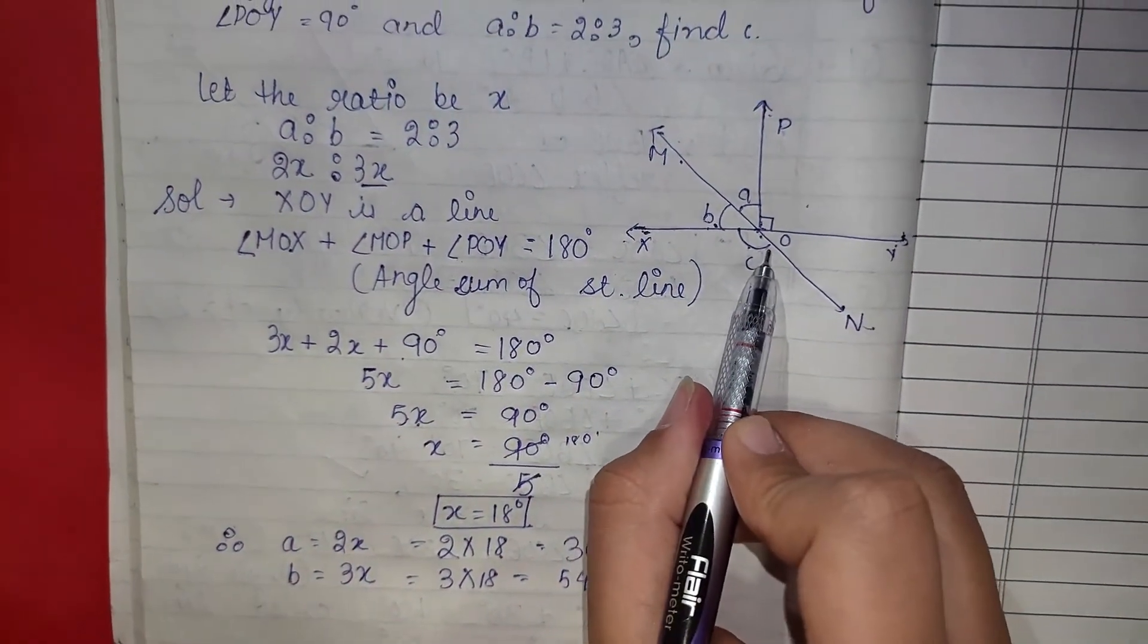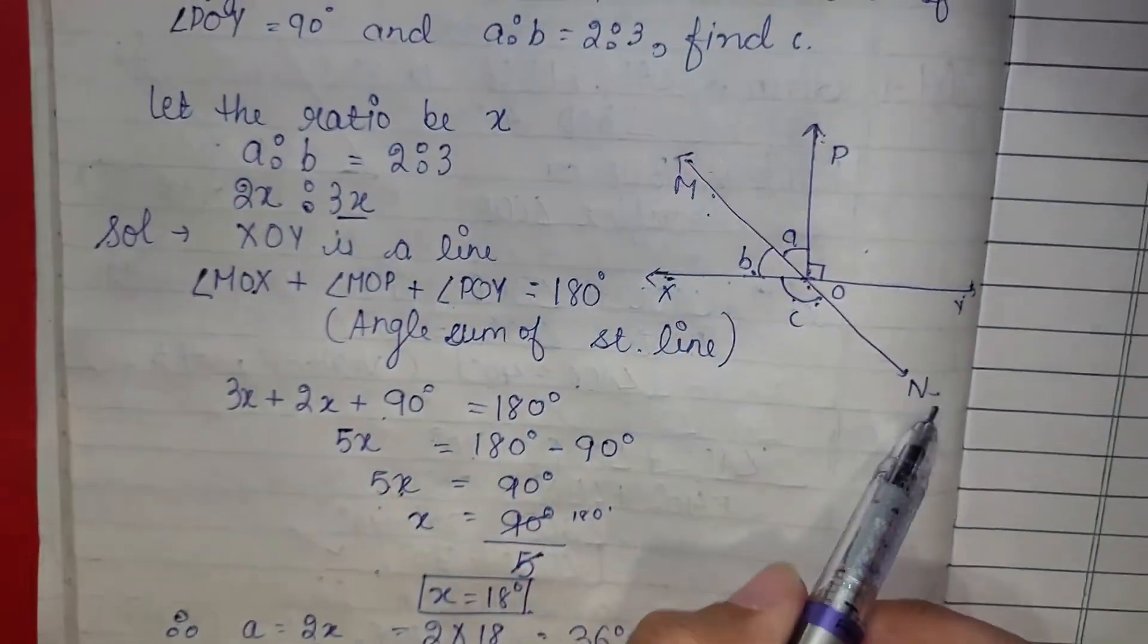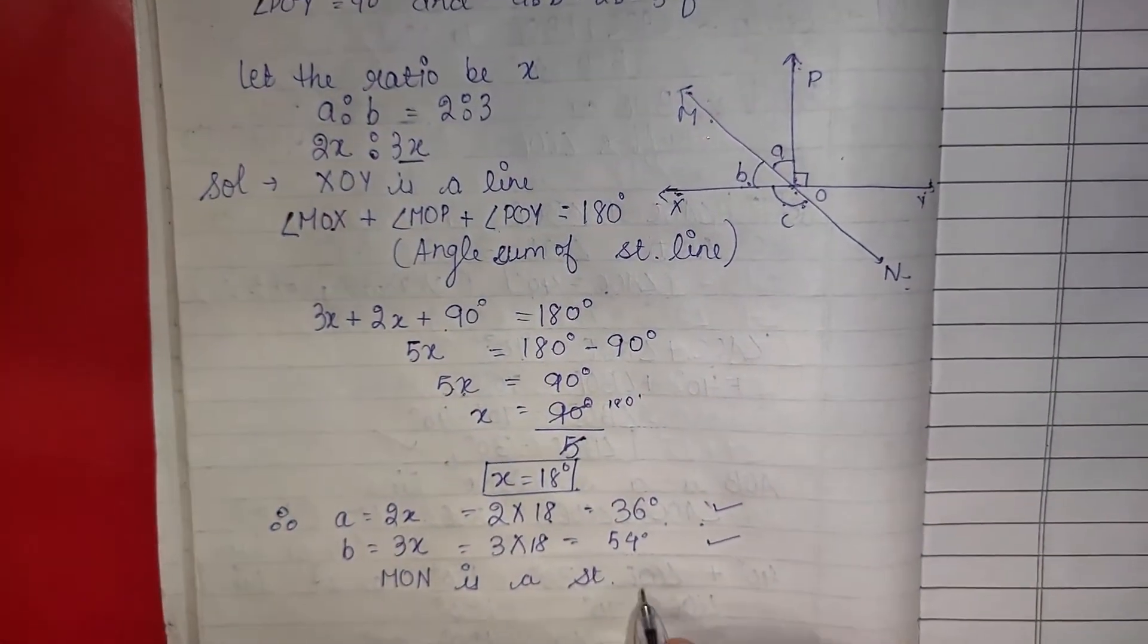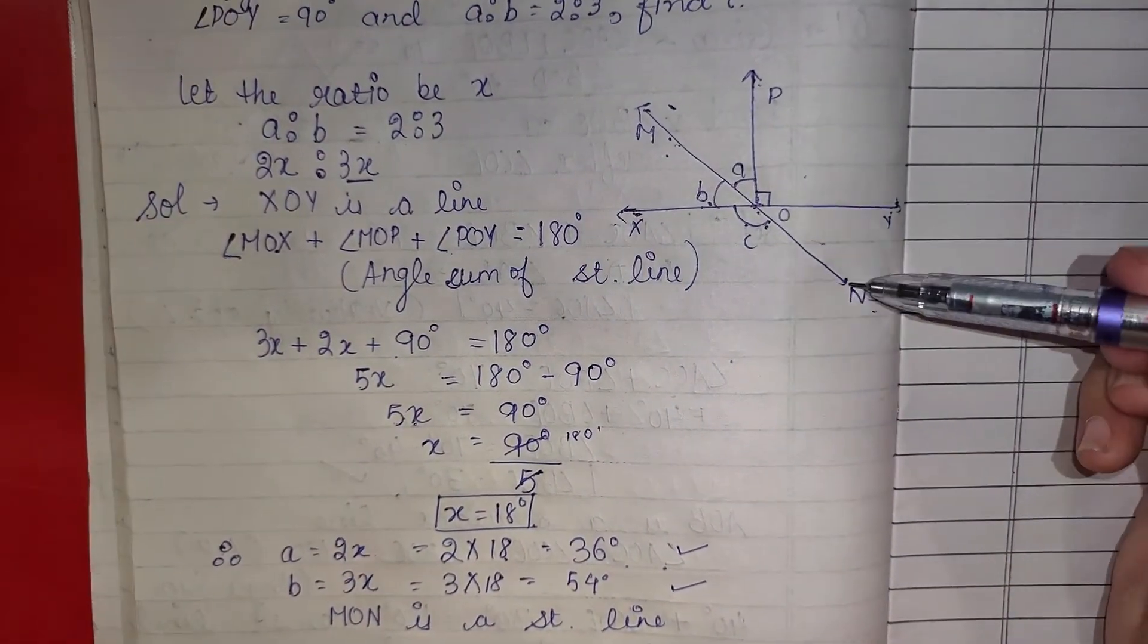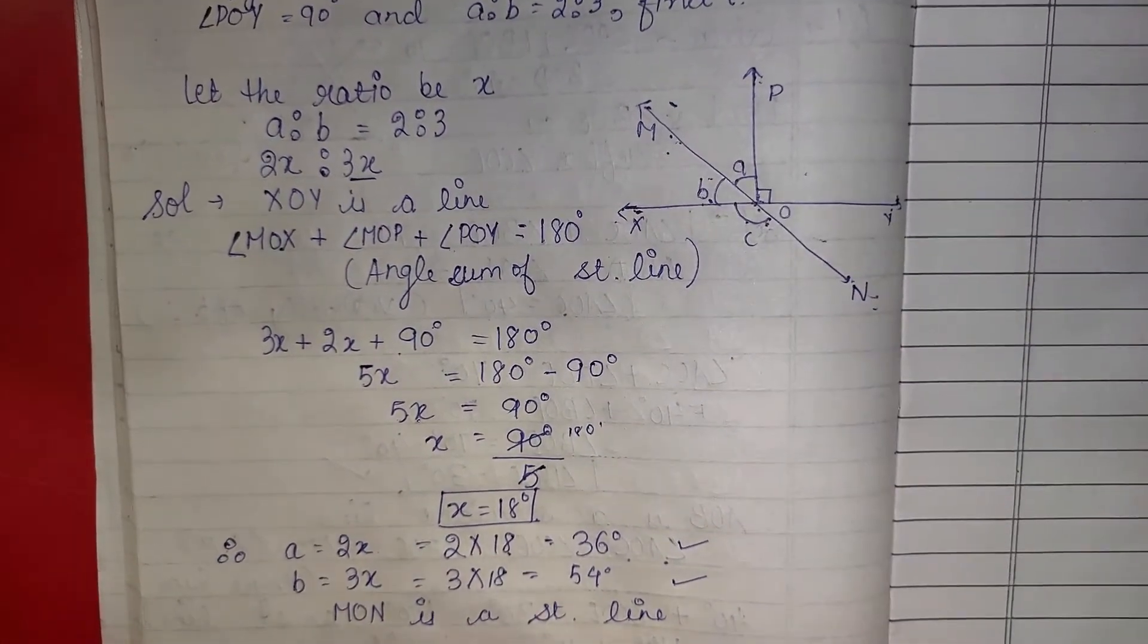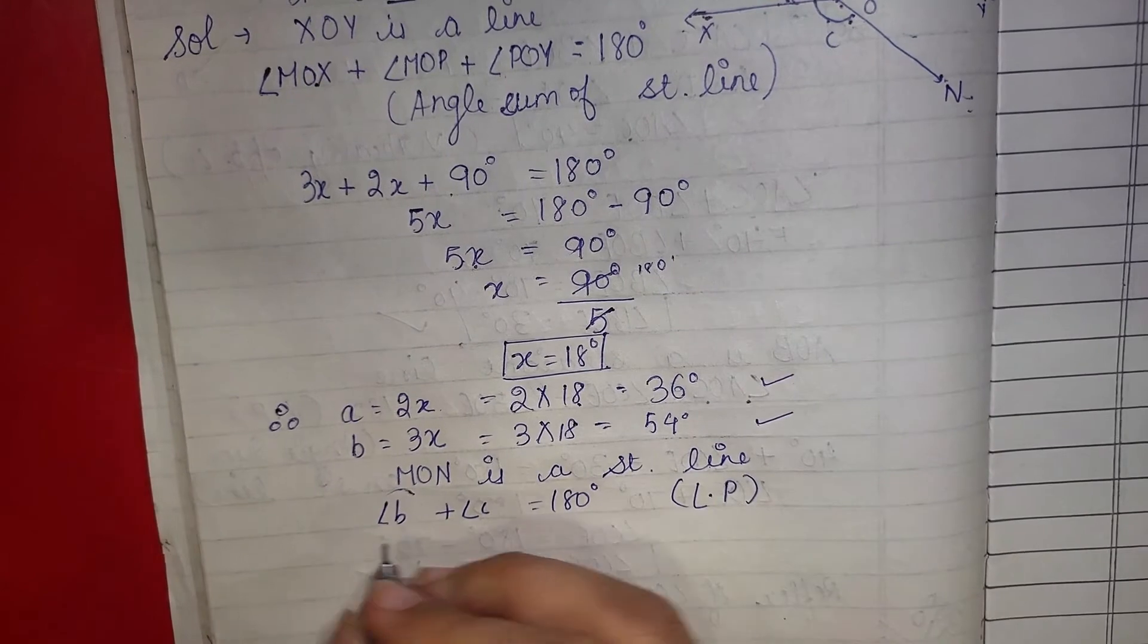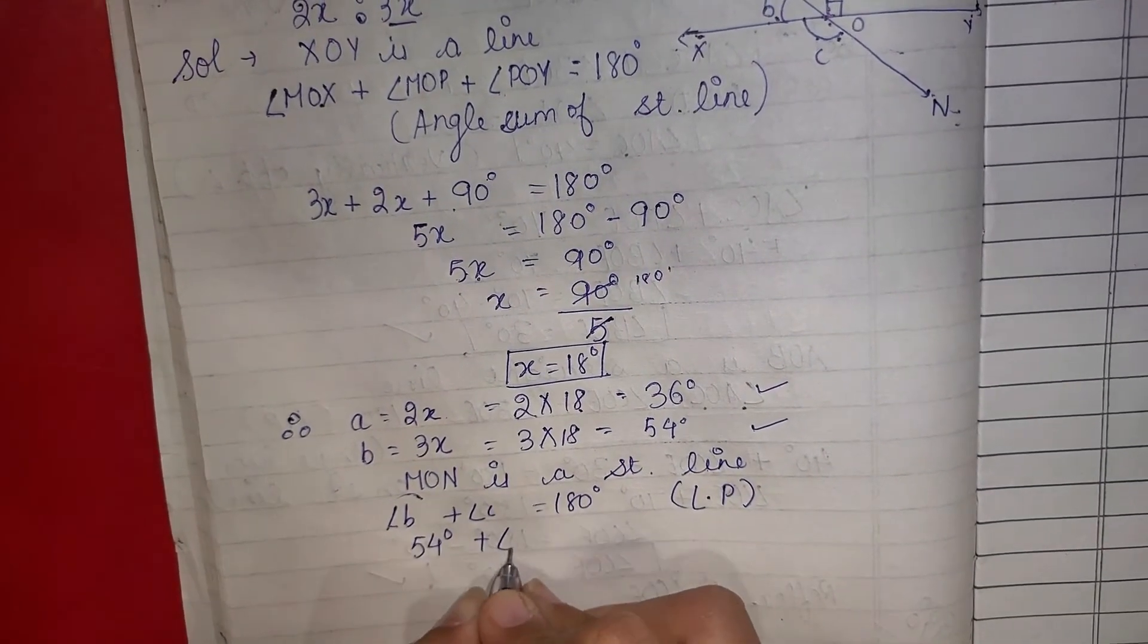अब हमसे पूछी गई है c की value। अब c की value हम देखते हैं। Now let's start. MON, MON is a straight line as you see in the figure. Angle MON is a straight line तो angle b और c linear pair बनेंगे। Angle b plus angle c is equals to 180 linear pair.